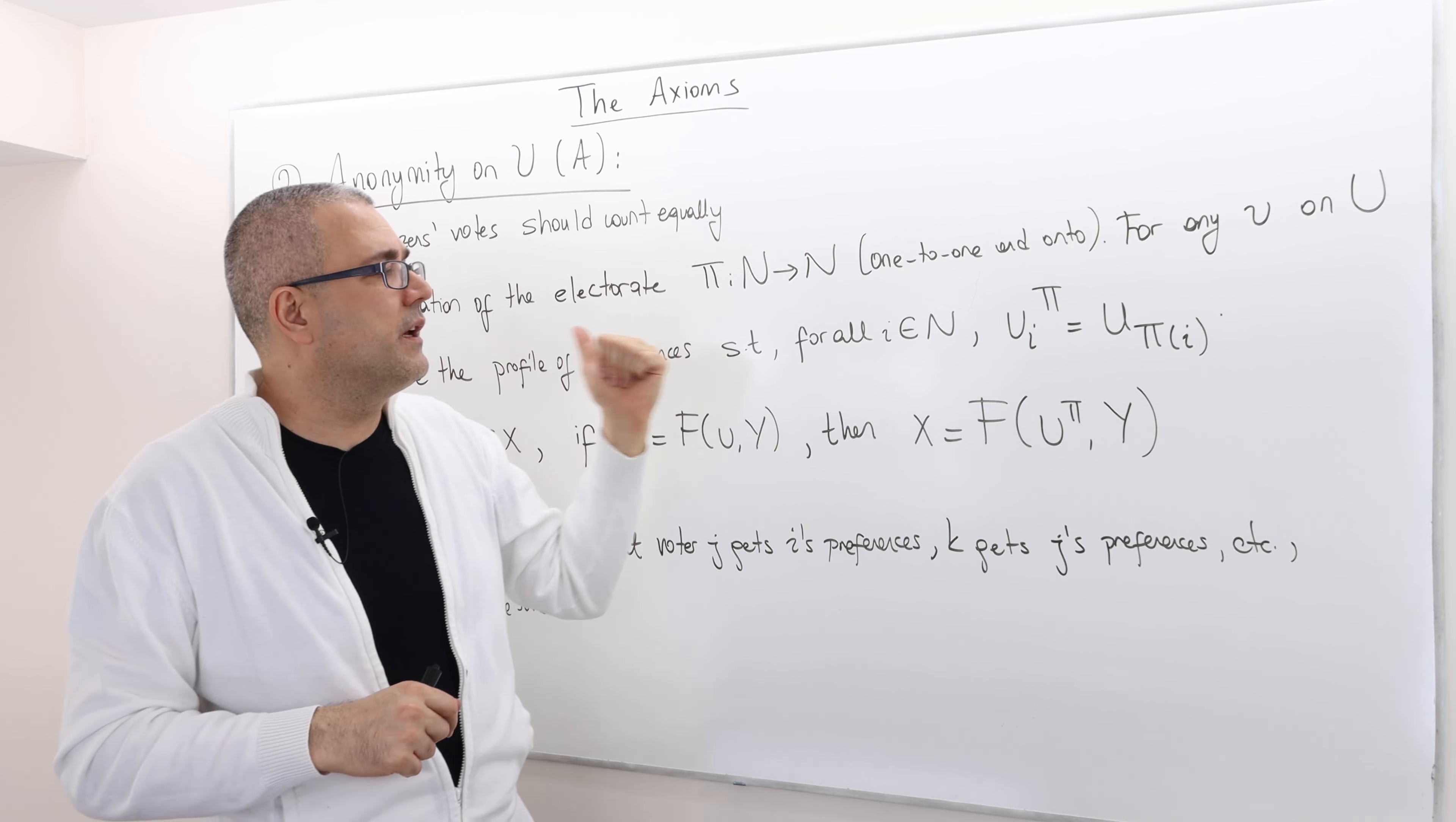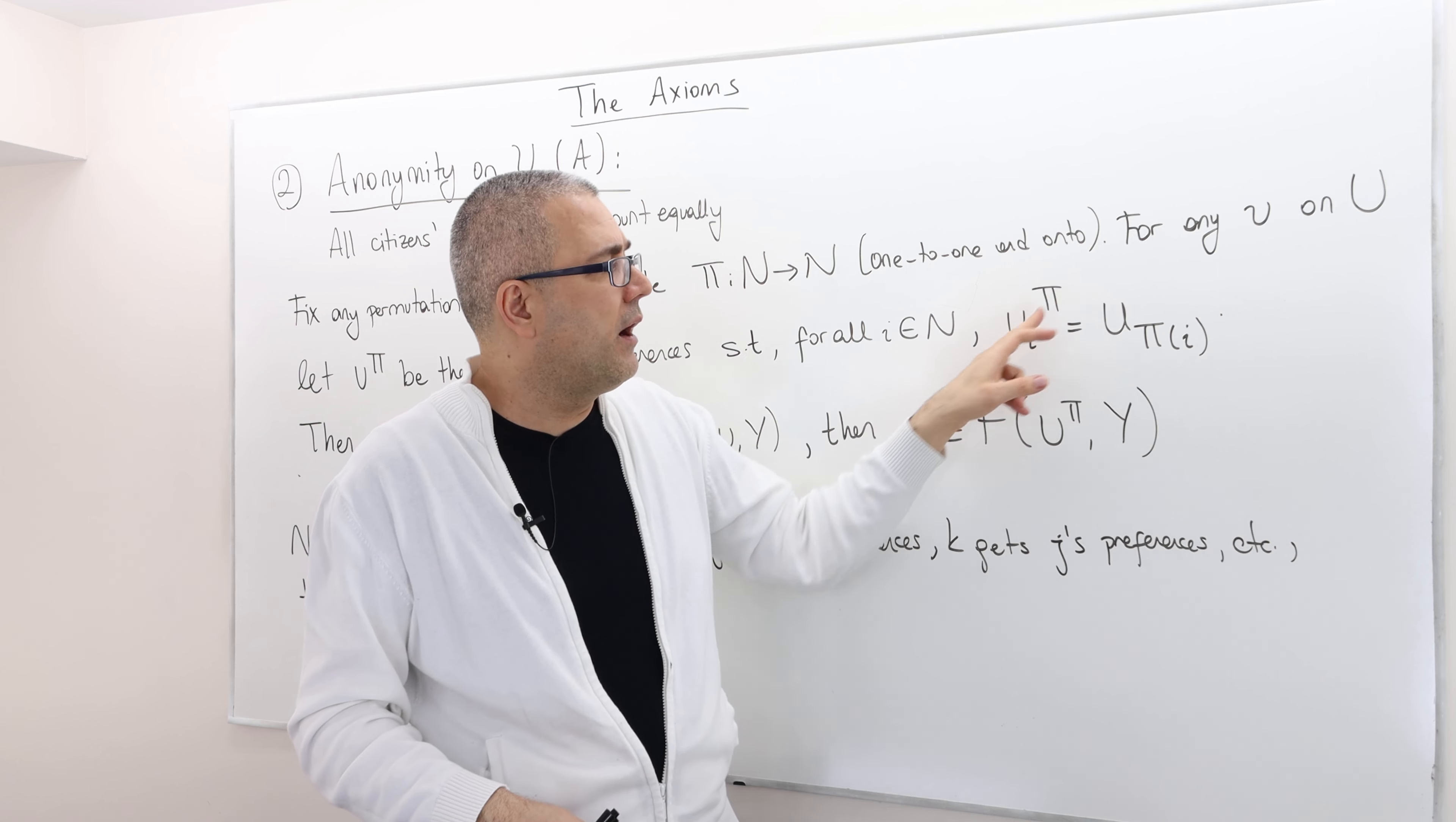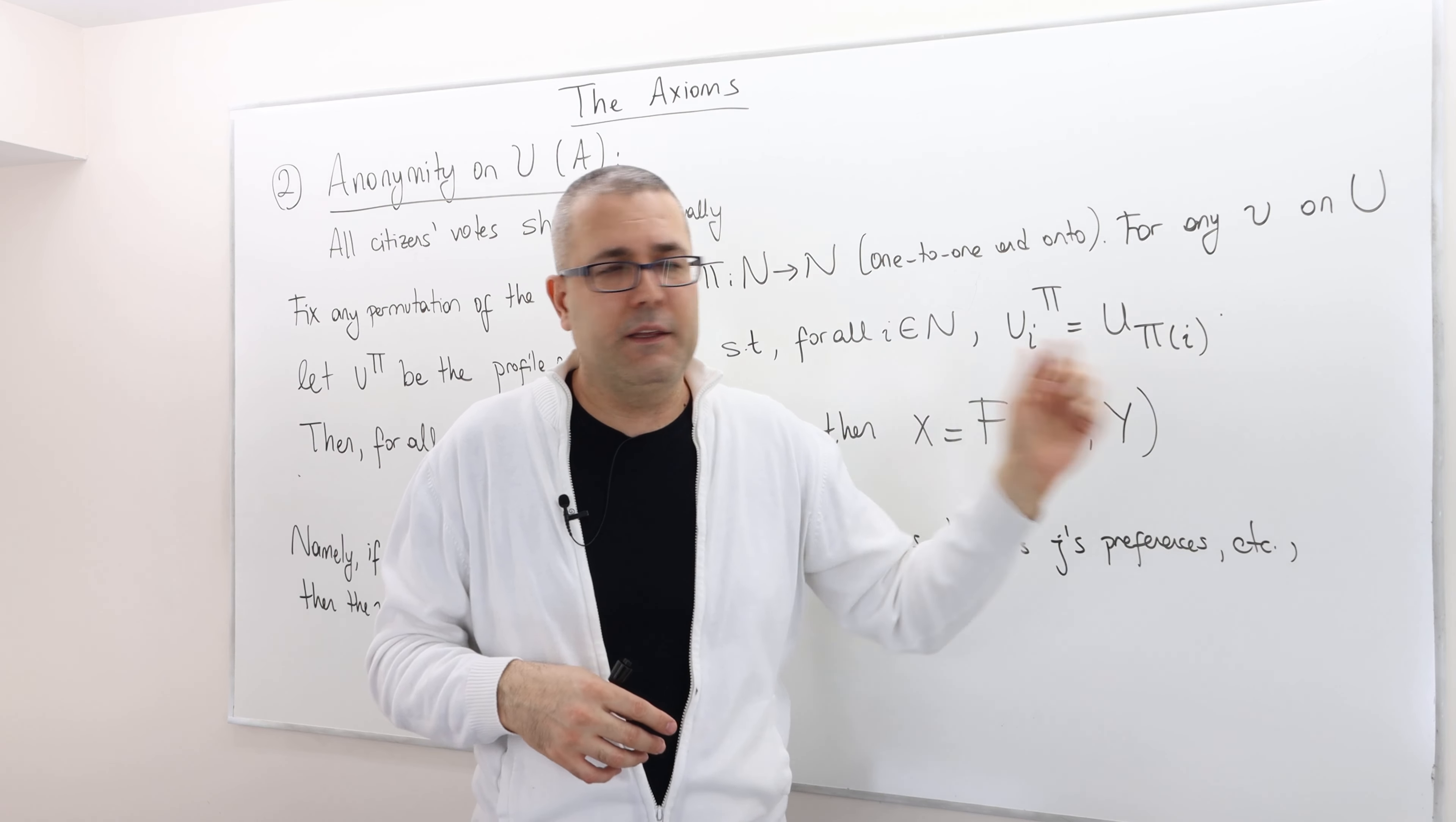For any preference profile u on the restricted domain U, let U of pi be the profile of preferences such that for any individual i or for any voter i, u_i^pi, meaning the voter i's preferences in this permutated preference profile is nothing but the utility or the preference of the agent pi i.